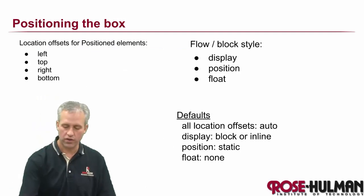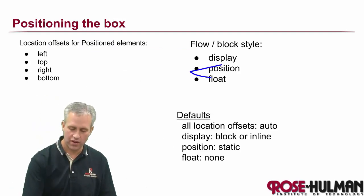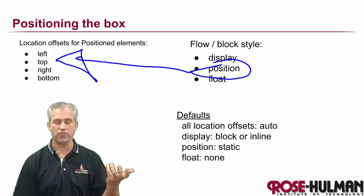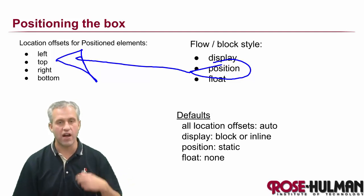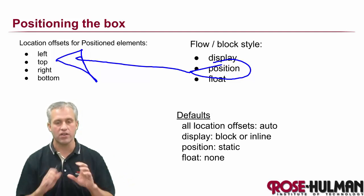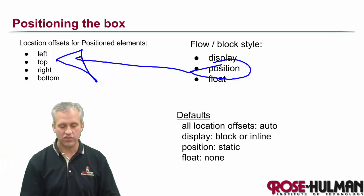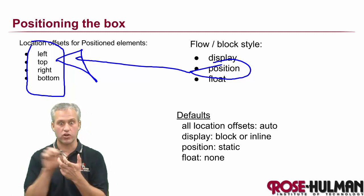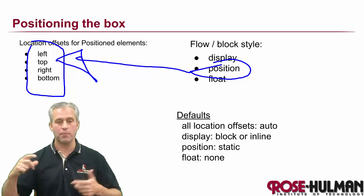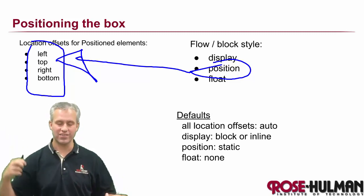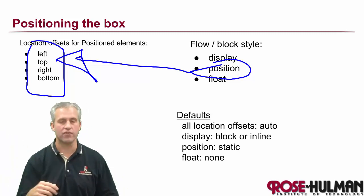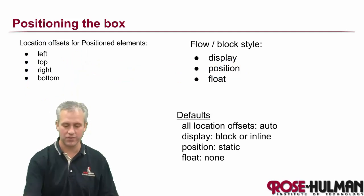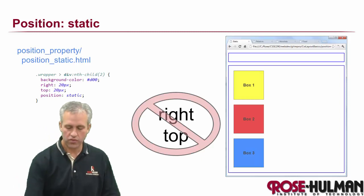Position also makes use of location offsets: left, top, bottom, and right. Interestingly, these same words are used very differently depending on the position value. For relative, they're relative to the element's current location. For absolute or fixed, they're relative to the parent. And if you're static, they're just ignored.